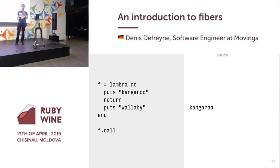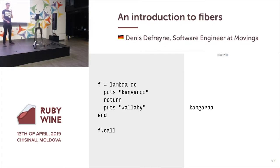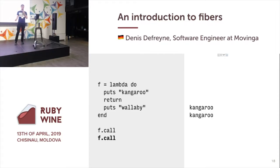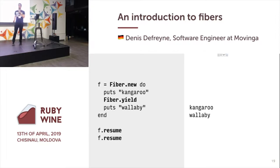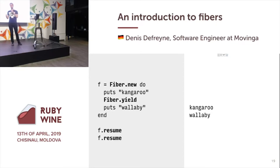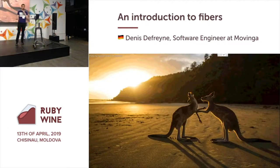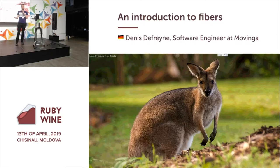Here's another example where I print 'kangaroo', then return, then print 'wallaby'. If I call this, it just prints 'kangaroo', and if I call it twice, it prints 'kangaroo' twice. Now I can replace lambda with Fiber.new, replace return with Fiber.yield, and replace call with resume. If I run this, I will print 'kangaroo', and then I will also print 'wallaby'. Fiber.yield is a suspension point that marks exactly where a Fiber will be paused, suspended, and where it can also be resumed. This slide shows exactly what a Fiber is.